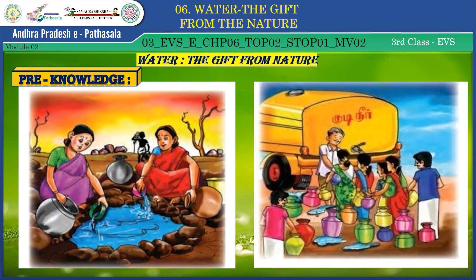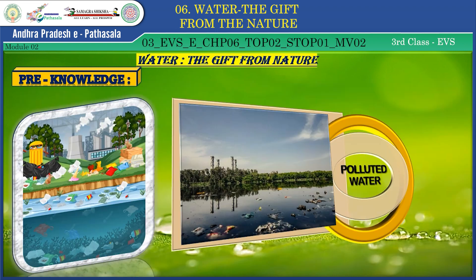Why is this happening? Can we use directly the water available in our surroundings? The answer is no. By seeing these pictures, we can understand how water is polluted due to human activities. A lot of garbage is also dumped into water. If we do this, we cannot get fresh water. You have also learned some precautions to get cleaner, fresh water.